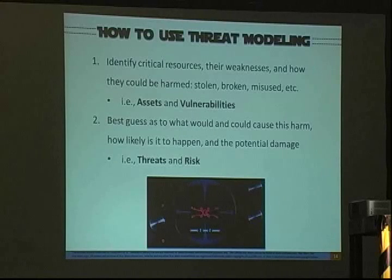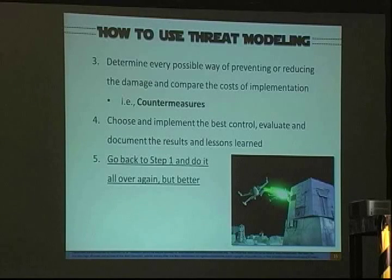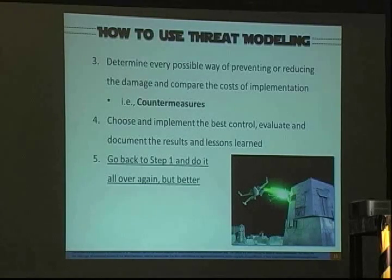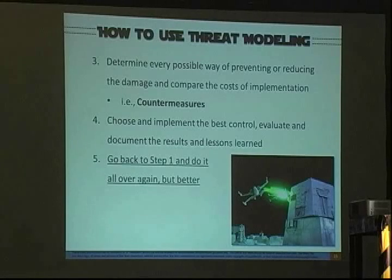Step two: make a best guess at what will cause harm — look at critical resources and list possible threats, like flood or denial of service. Steps three and four: determine every possible way of preventing or reducing damage, compare cost and implementation, then implement the best control and evaluate it. For example, taking an e-commerce site offline stops a DoS attack, but it's probably not the best solution. Step five: document results, lessons learned, and continue process improvement — take what you learned and go back and do it all over again.